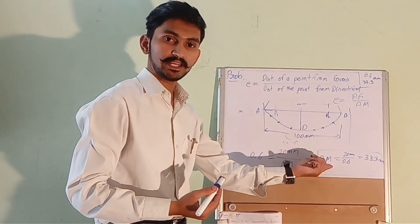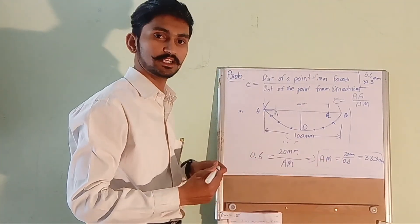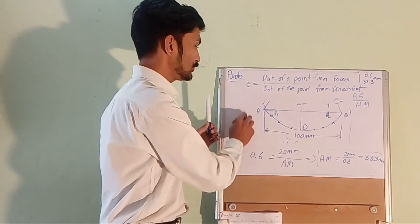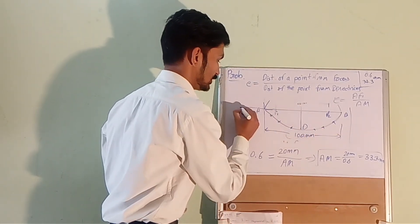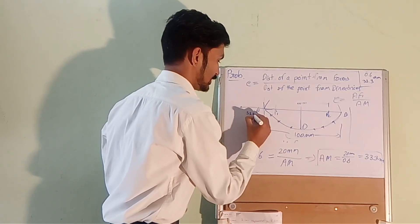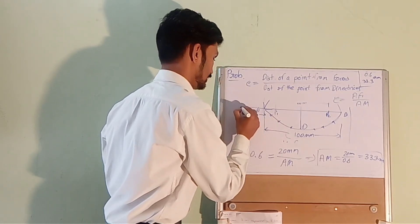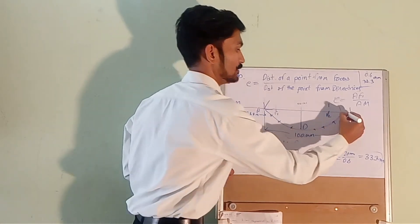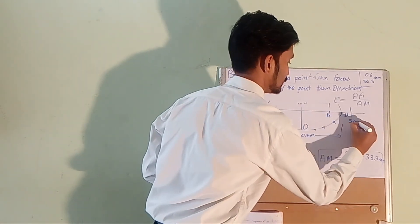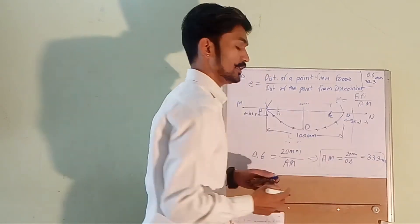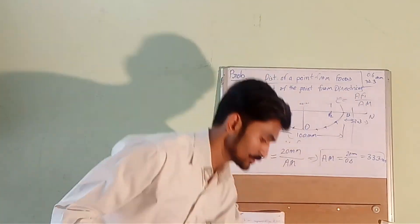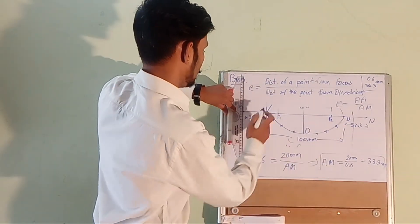So the distance of directrix from point A is 33.3 mm. So what we need to do is we will extend this line AB 33.3 mm till point M and here also 33.3 mm from B at point N.